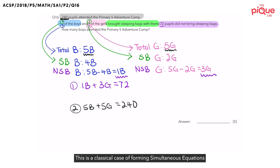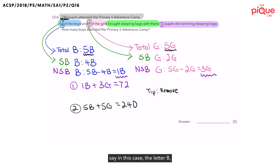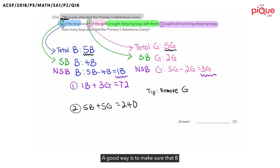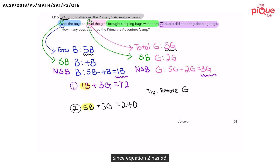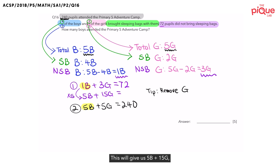This is the classical case of forming simultaneous equations to solve a question. As a tip, when we want to solve for one letter — say, the letter B — we need to get rid of the other letter, which is letter G. A good way is to make sure that B in both equation 1 and equation 2 has the same quantity. Since equation 2 has 5B, we can multiply equation 1 by 5, which gives us 5B plus 15G equals 360.